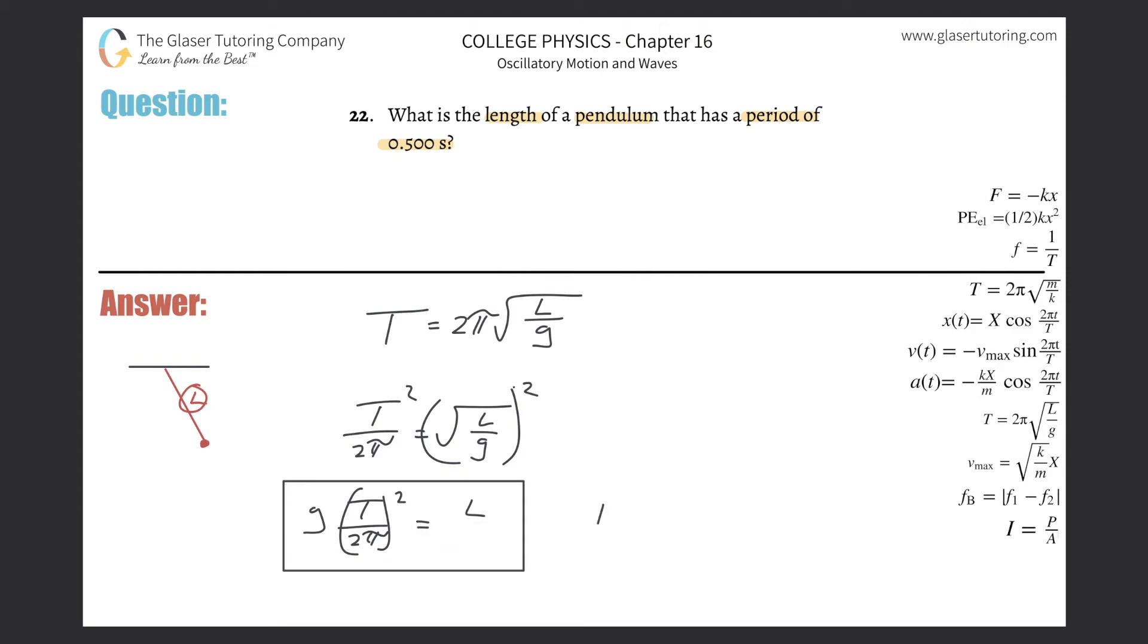So it's a simple problem, but you've got to consider what you're working with. So 9.8 times the period, 0.5, that's in seconds, good, divided by 2π, and that whole thing is squared. So let's see what we get.